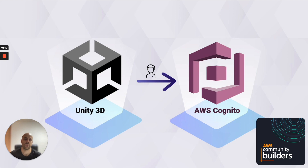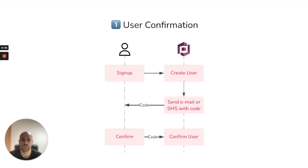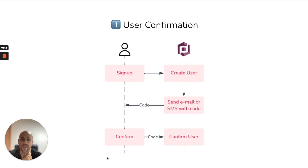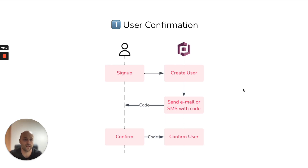There are three ways to confirm a user with Cognito. The first way is user confirmation — that means the user confirms himself. I'm pretty sure you have experienced this kind of flow: it's a typical flow where you register on a website and then have to enter a code you receive in your email.